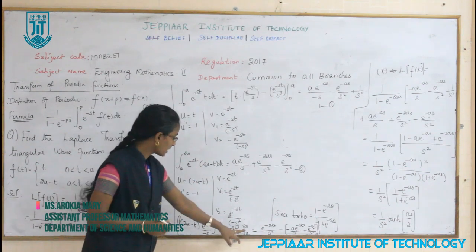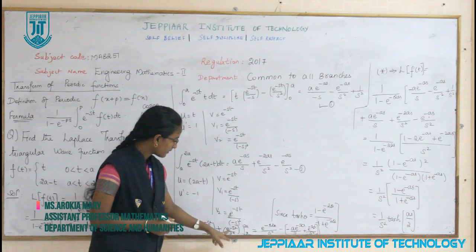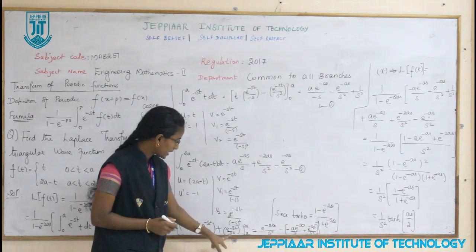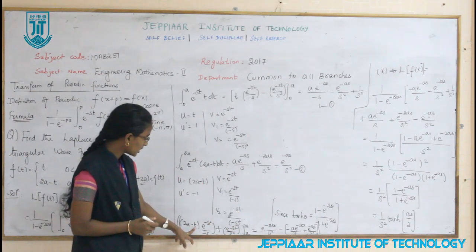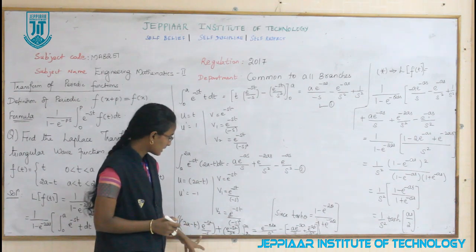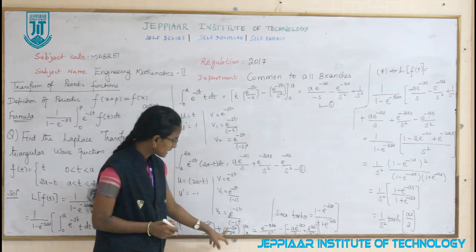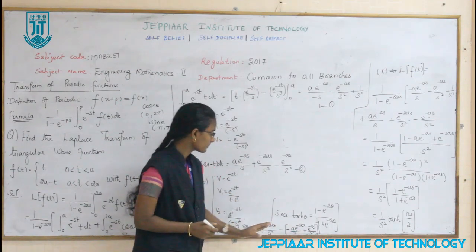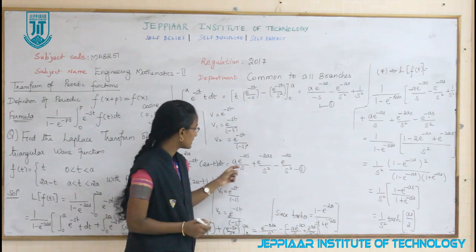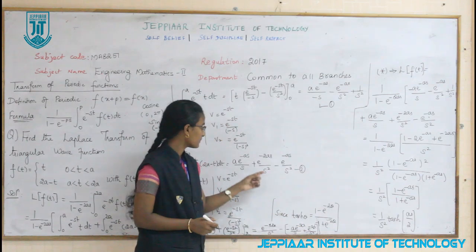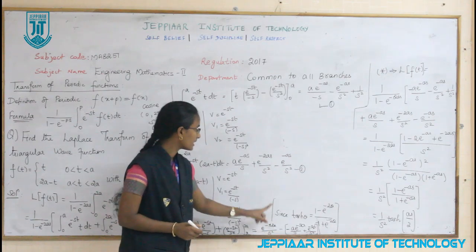Evaluated with the limit a to 2a: applying the upper limit t = 2a gives (2a − 2a) = 0 for the first term, plus e^(−2as)/s². Applying the lower limit t = a with a negative sign: (2a − a) = a, so minus [a·e^(−as)/(−s) + e^(−as)/s²], which gives +a·e^(−as)/s − e^(−as)/s² + e^(−2as)/s².